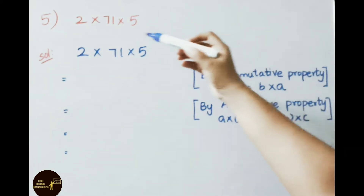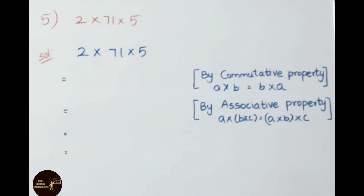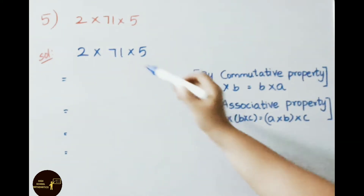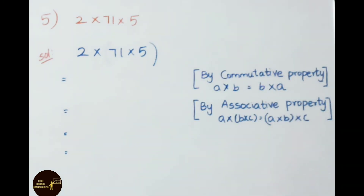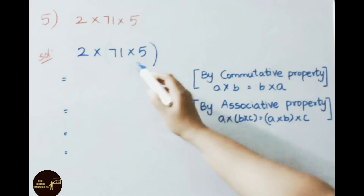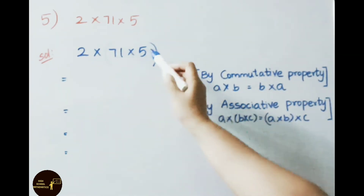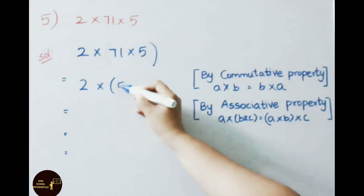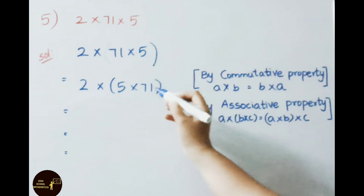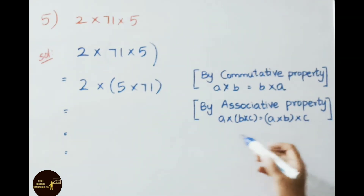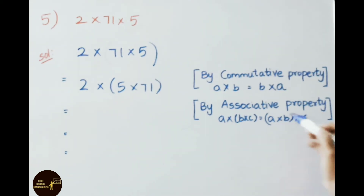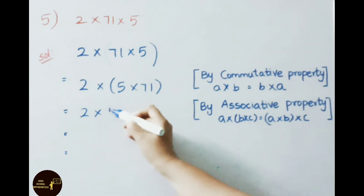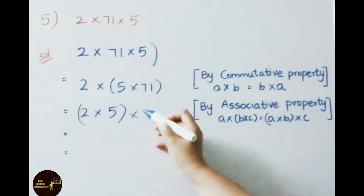Let us see the fifth sum: 2 into 71 into 5. We shall apply the commutative and associative properties under multiplication. For these two numbers I apply commutative property: A into B can be written as B into A. Write down 2 into 5 into 71. Now this looks like associative property: A into B into C can be written as (A into B) into C.